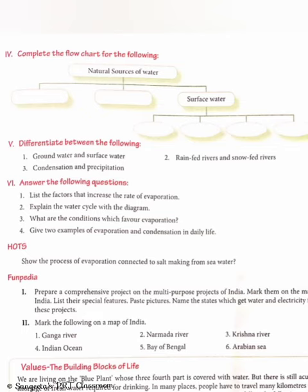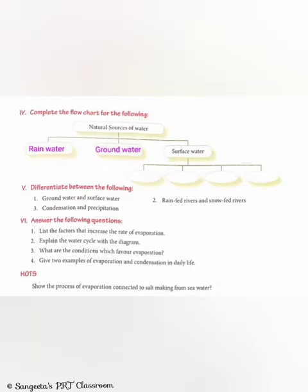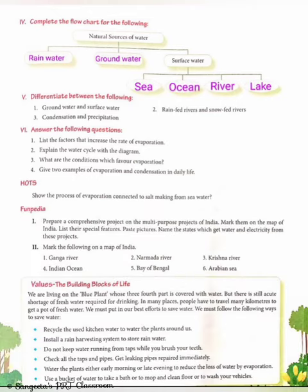Part 4 — Complete the flow chart. Natural sources of water can be broadly classified into three parts: rain water, ground water and surface water. In the first two boxes, write rain water and ground water. Under surface water, there are four boxes — write any four sources such as sea, ocean, river, lake or pond.